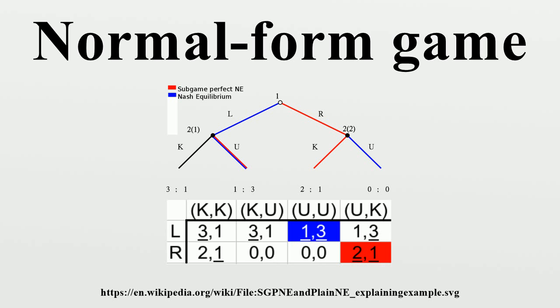In static games of complete, perfect information, a normal form representation of a game is a specification of players' strategy spaces and payoff functions.